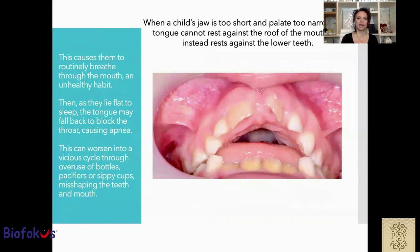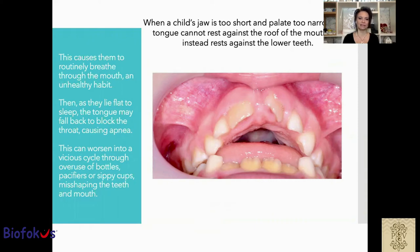When a child's jaw is too short and the palate too narrow, the tongue cannot rest against the roof of the mouth and instead rests against the lower teeth. This causes them to habitually breathe through the mouth, an unhealthy habit. Then, as they lie flat to sleep, the tongue may fall back and block the throat, causing apnea. This can worsen into a vicious cycle through overuse of bottle or pacifier, misshaping the teeth and the mouth.